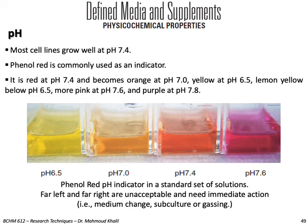We'll talk briefly on defined media, supplements, and some physicochemical properties. pH is an important factor in cell culture growth. Most cell lines grow well at pH 7.4. Phenol red is used as an indicator in the culture medium. It is red at pH 7.4, orange at pH 7.0, yellow at pH 6.5, and lemon yellow below 6.5. It becomes more pink at 7.6 and purple at 7.8.